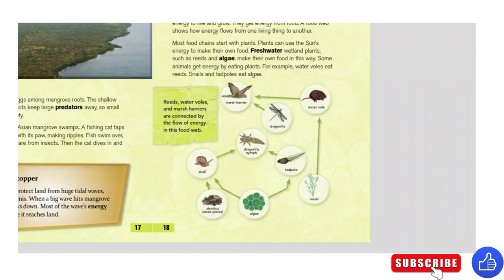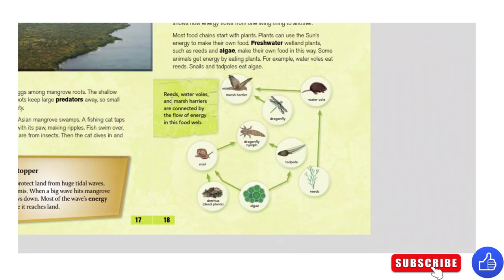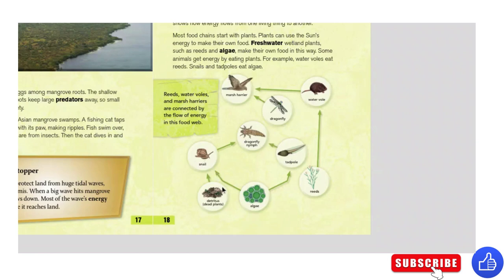Let's take a look at the food web. We have reeds, water voles, and marsh harriers. A water vole eats reeds, and then a harrier eats the vole. The tadpole eats the algae, the snail eats the algae, and the tadpole also eats the dragonfly. Energy flows through the web.